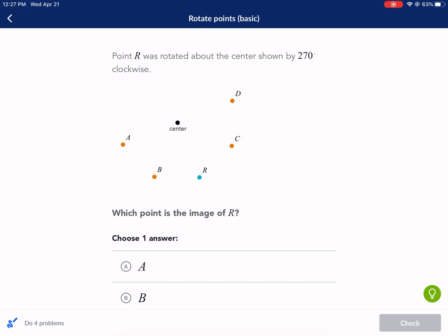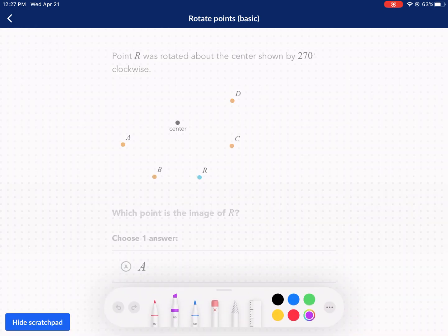Here we have point R was rotated about the center shown by 270 degrees clockwise. Which point is the image of R? Now we're going to highlight a couple things here.